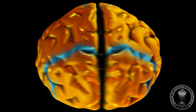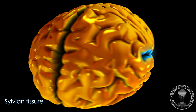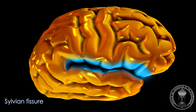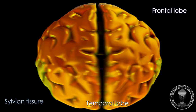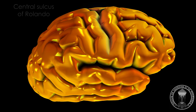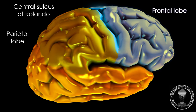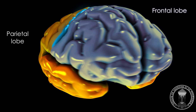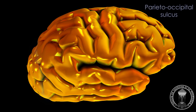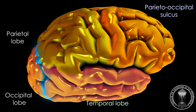Each hemisphere is cut by deep fissures that define lobes. The first is the lateral sulcus, or sylvian fissure, where lies the middle cerebral artery — it separates the frontal lobe from the temporal lobe. The second is the central sulcus, or fissure of Rolando, between the frontal lobe and the parietal lobe. The third is the parieto-occipital sulcus, separating the occipital lobe from the temporal and parietal lobes.